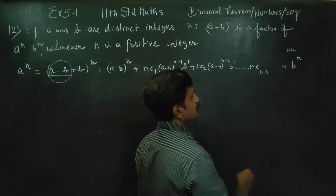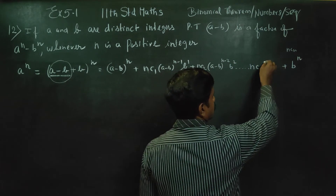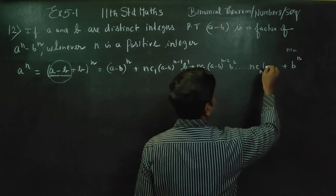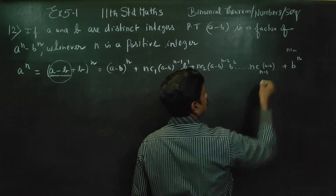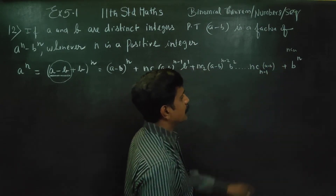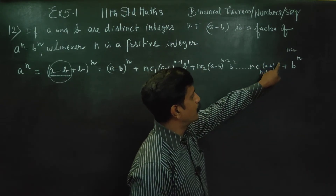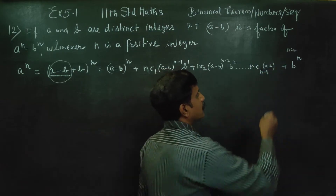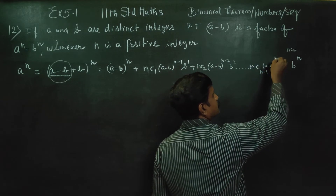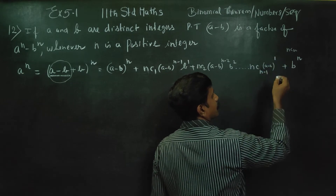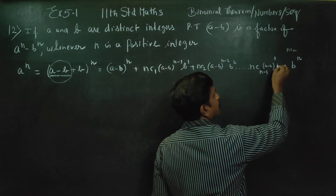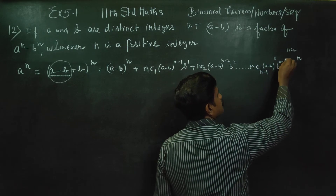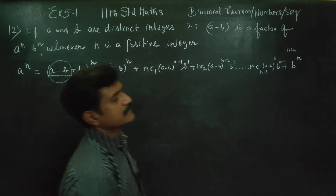nC(n-1), in the term, (A minus B) all power 1, B power n minus 1. Am I right?